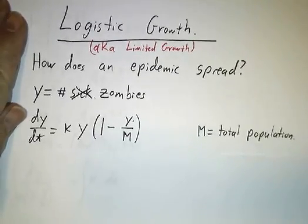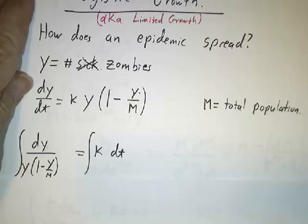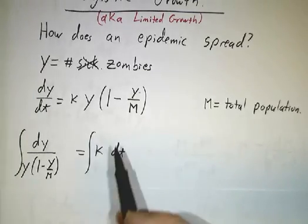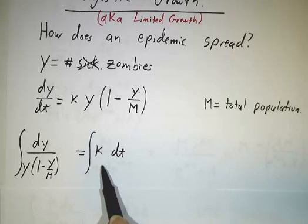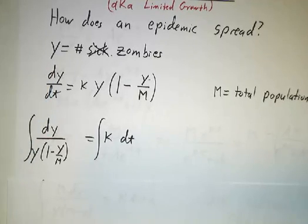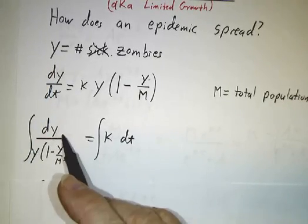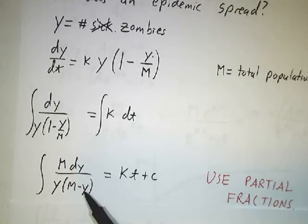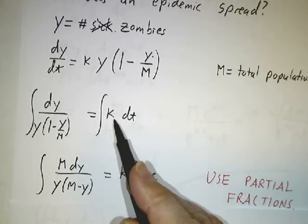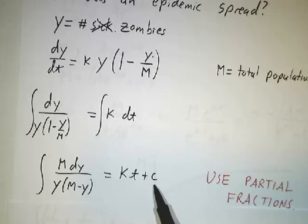So how do we solve that? Well, it's a separable equation, so we divide both sides of the equation by y times 1 minus y over M and multiply both sides by dt and integrate. And this is more conveniently written as M dy over y times M minus y. The integral of the right hand side is just kt plus a constant.